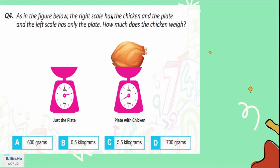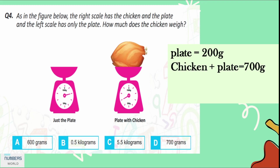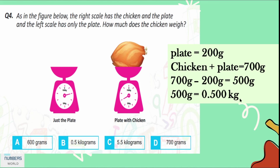Question number 4: as shown in the figure, the right scale has the chicken and the plate, and the left scale has only the plate. How much does the chicken weigh? One full circle of the scale is 1000 grams, so each interval between two bars is 100 grams. The left scale with just the plate reads at the second bar, so the plate weighs 200 grams. The right scale with plate and chicken reads 700 grams. Subtracting the plate's weight, the chicken weighs 500 grams, equal to 0.5 kg. Option B is correct.